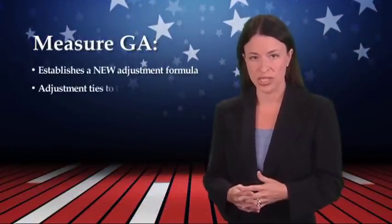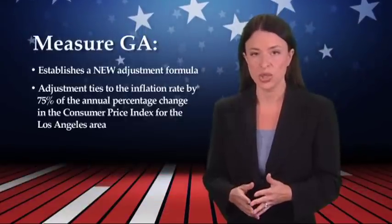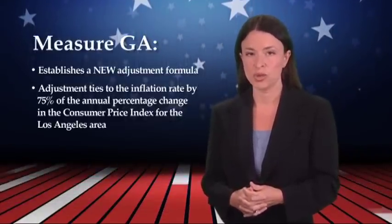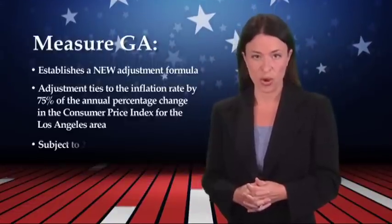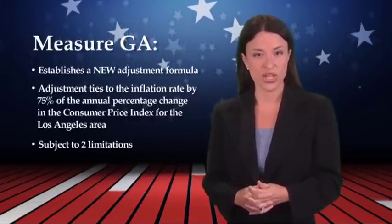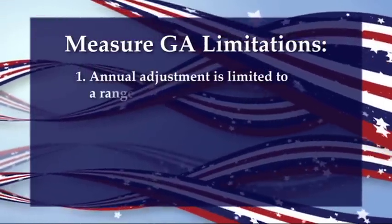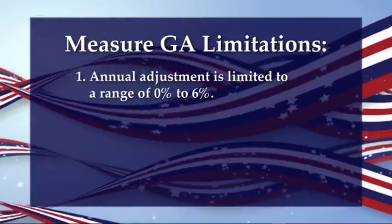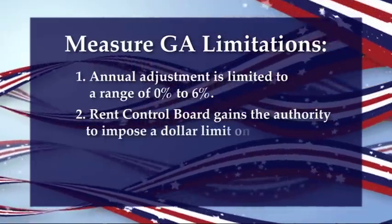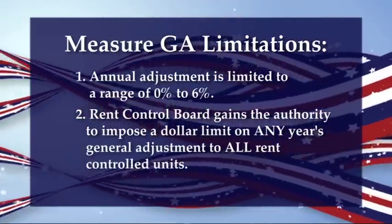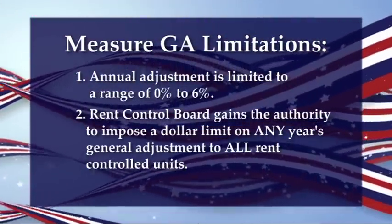Measure G-A would establish a new adjustment formula, which would tie the general adjustment to the inflation rate by 75% of the annual percentage change in the Consumer Price Index for the Los Angeles area. However, this proposal would be subject to two limitations: it would limit the annual adjustment to a range of 0 to no more than 6%, and it would grant the Rent Control Board the authority to impose a dollar limit on any year's general adjustment to all controlled units.